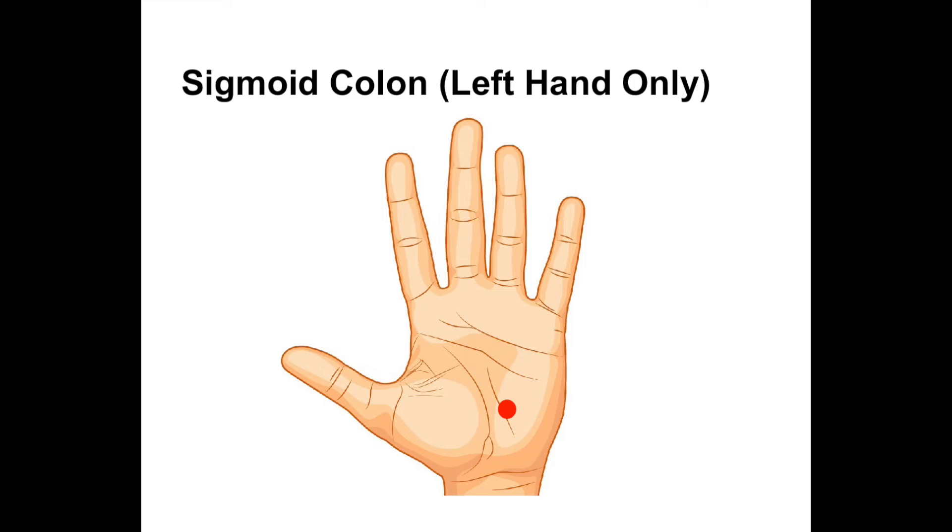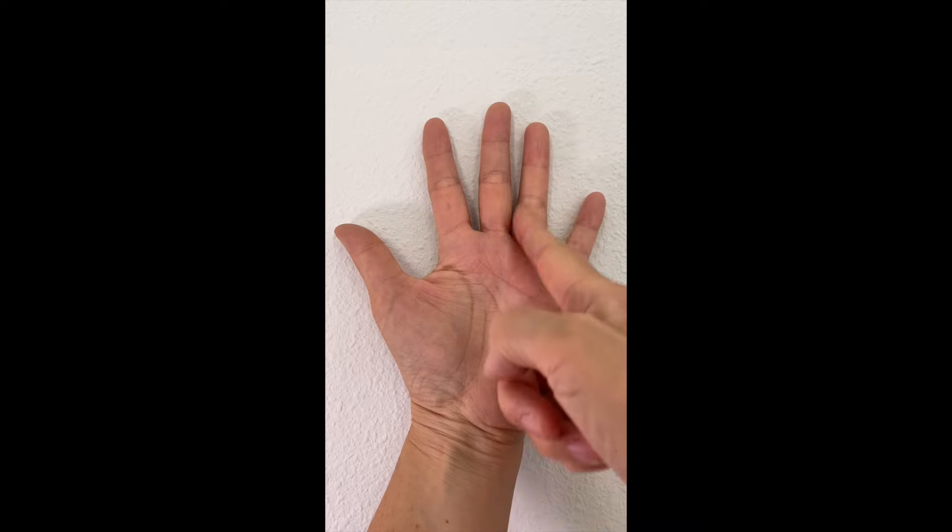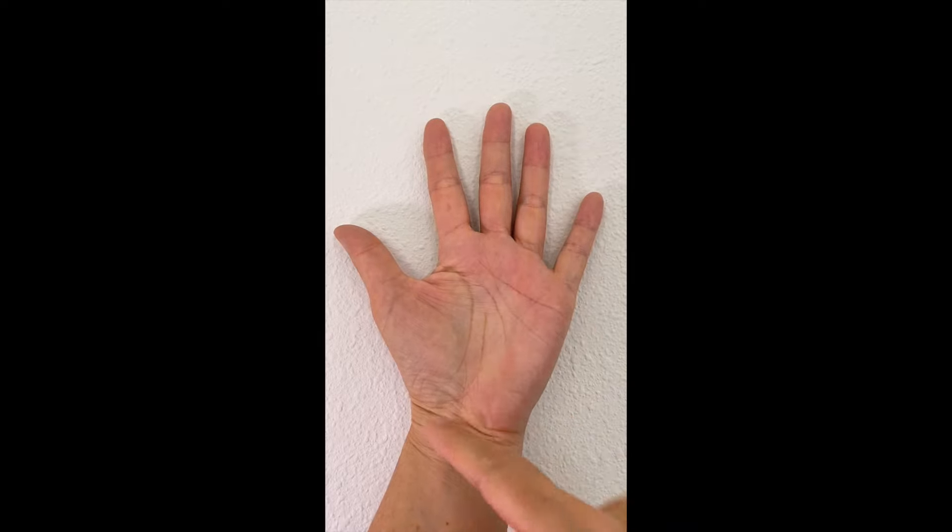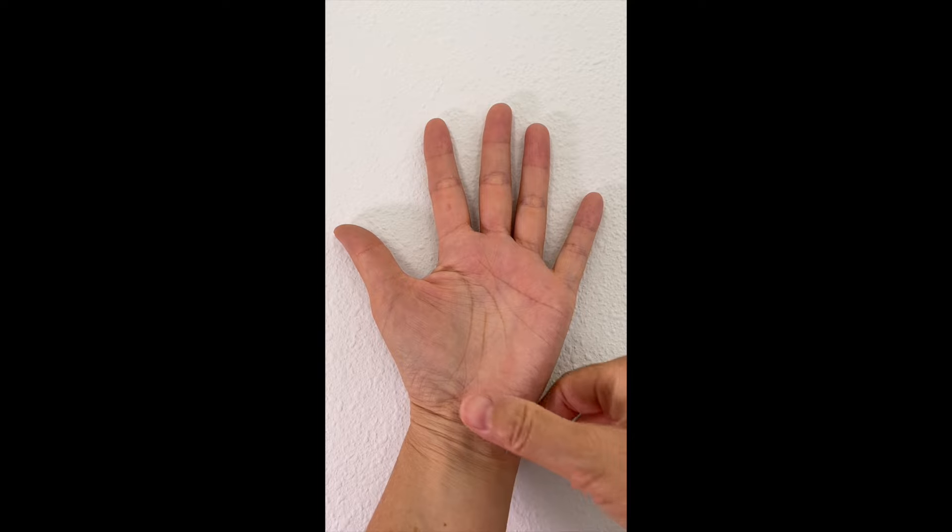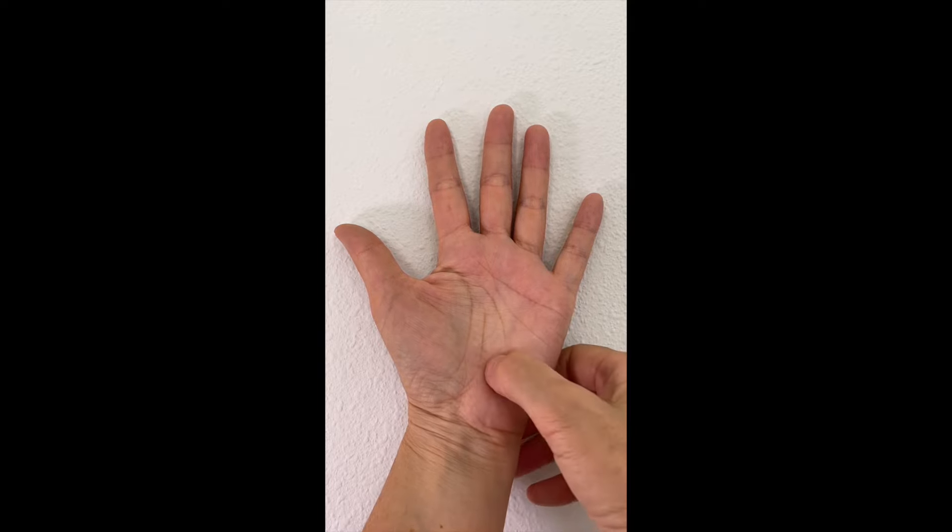The first one is sigmoid colon. It is located on the ring finger line, two thumb widths from the wrist line. This one is only on your left hand. Press with a hooked thumb for 7 seconds.